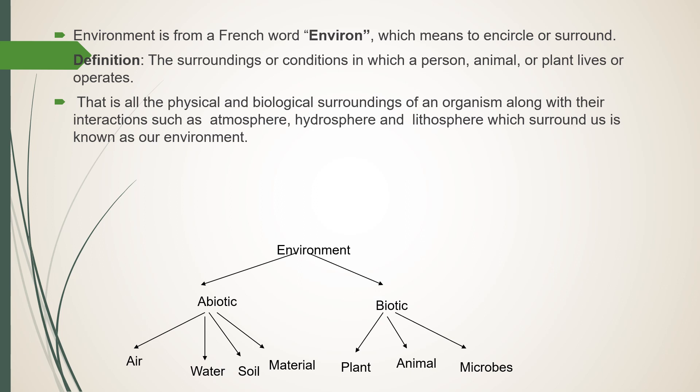Environment is divided into two components: abiotic components and biotic components. The abiotic component consists of air, water, soil and materials. The biotic component consists of plants, animals and microbes.